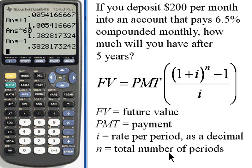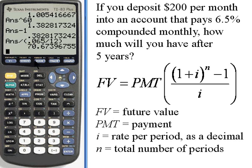i once again is the... I'm sorry, i is the rate per period as a decimal. So I want to divide. I'm going to have to use parentheses for this, because I'm going to figure out i again. It's 0.065, that's the rate per year, divided by 12, that's the number of periods per year, and we get 70.6739.